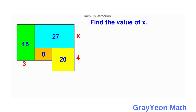So first, we need to label this length as 27 over x. If that is 27 over x, then if we focus on the 20 square unit rectangle, if the width is 4, then the length should be 5. And for the green rectangle, if the length is 3, then the width should be 5.